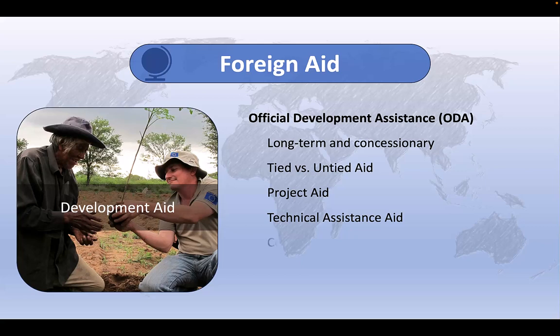And finally, commodity aid, sometimes called in-kind aid, involves the provision of specific goods or commodities in the form of foreign aid. Rather than providing financial resources, commodity aid donates tangible products or commodities like food, medicine, agriculture equipment, machinery, or other items to recipient countries. Food aid is a good example of a specific type of commodity aid.